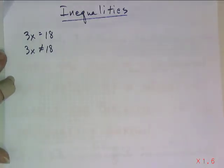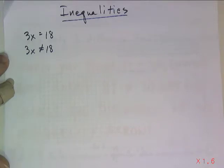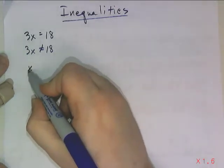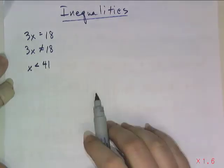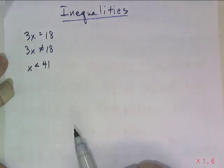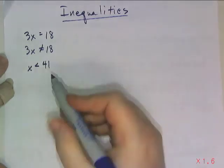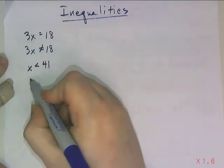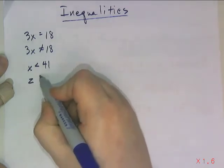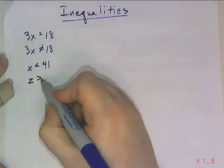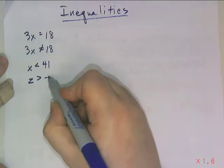The inequality statements that we're going to be working with actually use other inequality symbols. For example, I might say x is less than — or strictly less than — 41. I can flip that sign around; perhaps z is going to be greater than — or strictly greater than — negative 2.